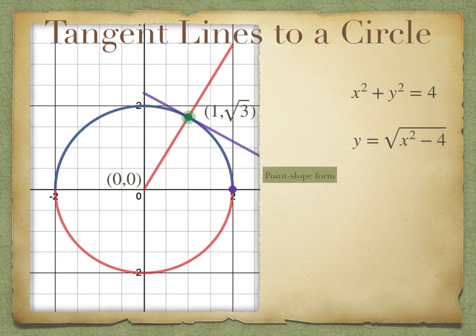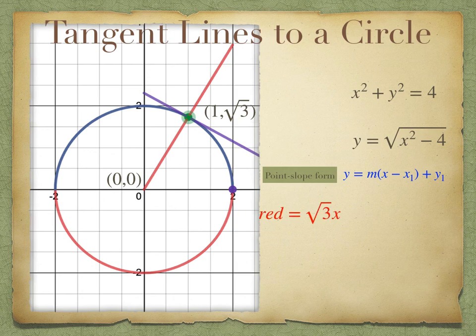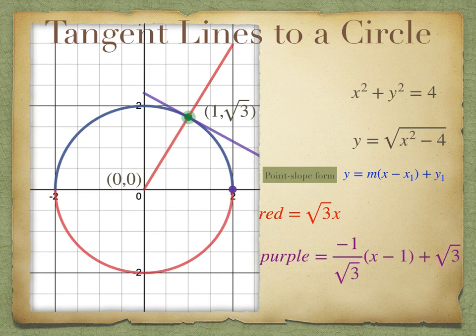Using the point-slope form y equals m times (x minus x1) plus y1, where m is the slope and (x1, y1) is a point on the line, we can find the formula of the red line. Because we know the two points (0, 0) and (1, √3), we can find the slope, which is √3, and plug into point-slope form to get y equals √3·x. Since the red and purple lines are perpendicular, we use the opposite reciprocal of slopes and the point (1, √3) to find the equation of the purple line.